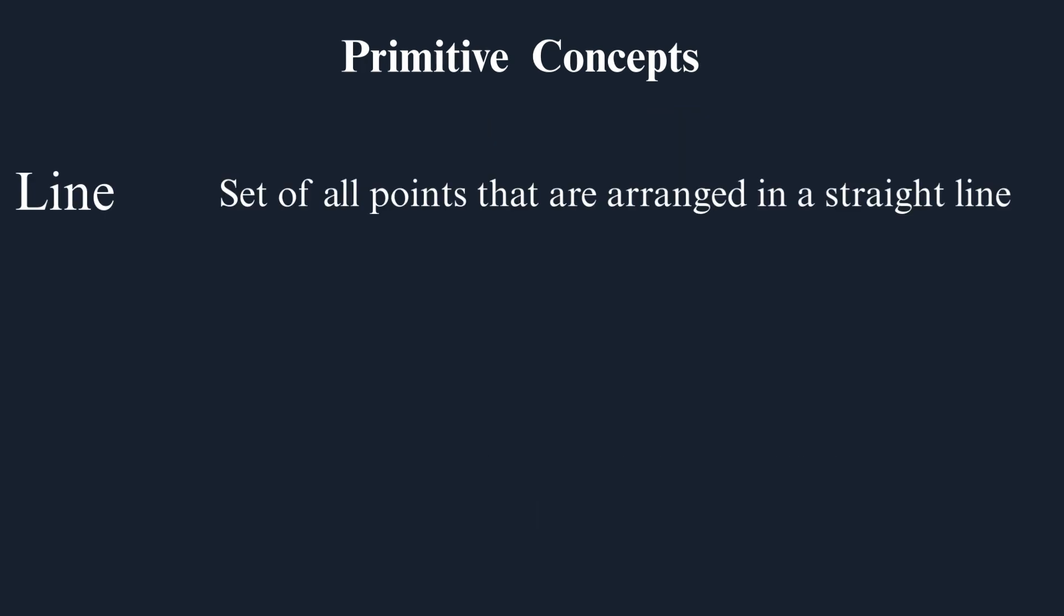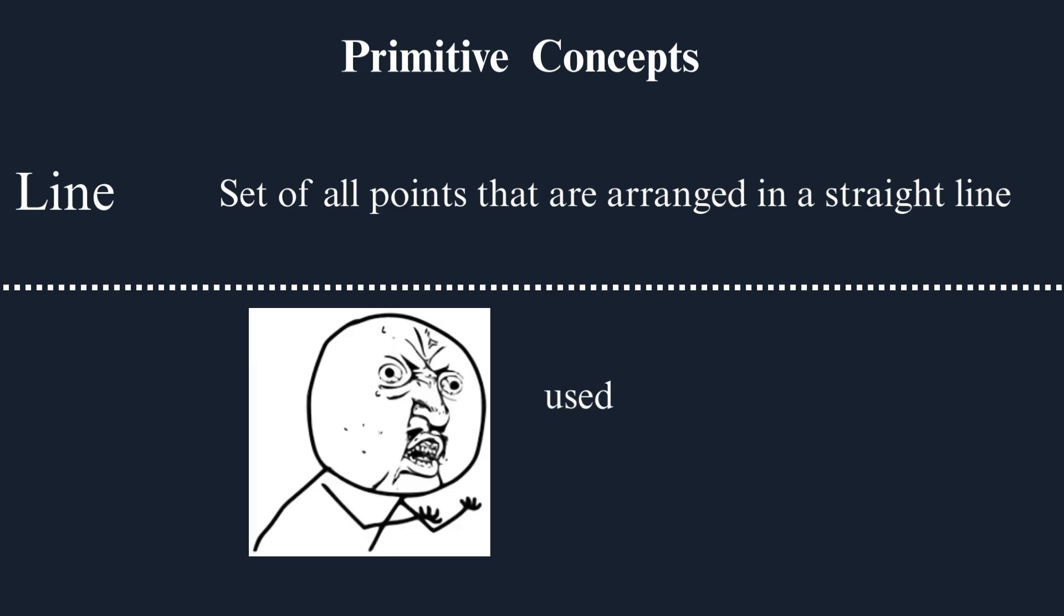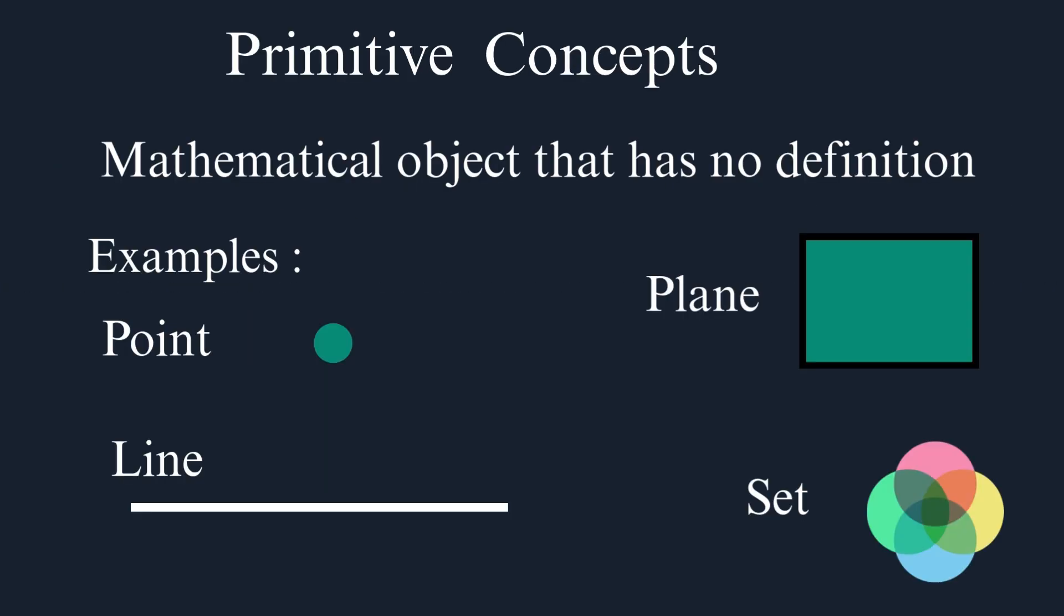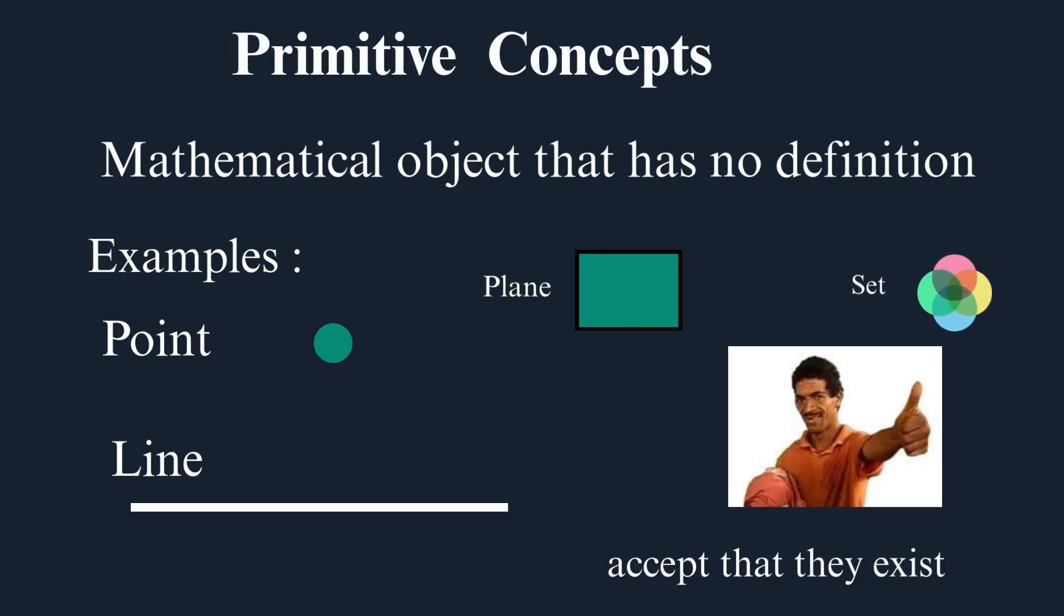For example, you could try to define a line as the set of all points that are arranged in a straight line. However, you use the word line to define what a line is, and that's not valid. So the way mathematics works requires us to have primitive concepts that are mathematical objects without definition. They are our starting points. We simply accept that they exist, that they satisfy axioms, and we move forward to then be able to prove theorems.